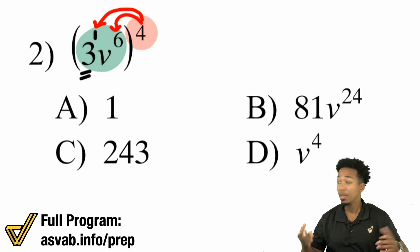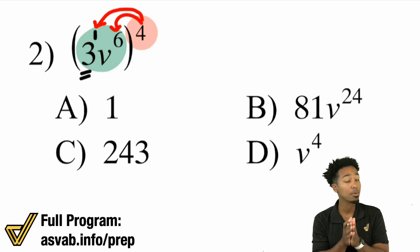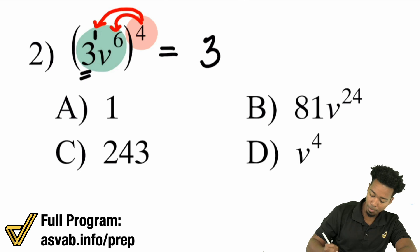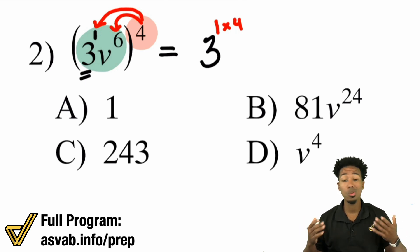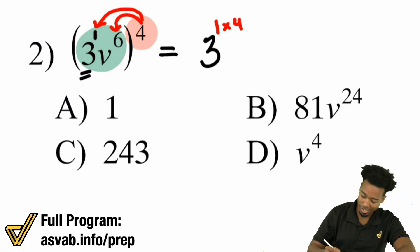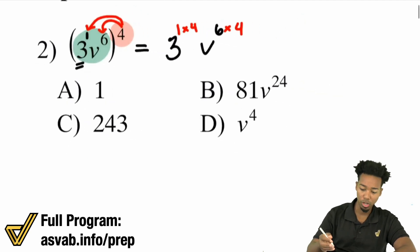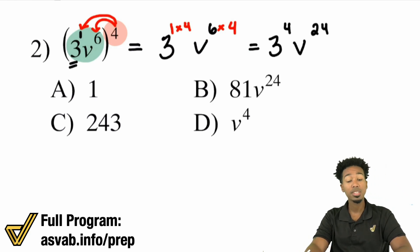Remember: if you don't see an exponent, the exponent is 1. You're going to multiply the exponent on the outside with every exponent on the inside. So the rule is power to a power, multiply the exponents. Each individual piece has its own exponent. You're going to have 3 to the power of 4 — because 1 times 4 is 4. Shortcut: if you don't see an exponent, just replace it with the exponent on the outside, because 1 times anything is that anything. The V has a 6, so that's 6 times 4. 1 times 4 is 4; 6 times 4 is 24. So we have 3 to the power of 4 times V to the power of 24.